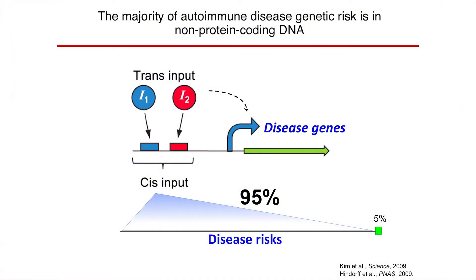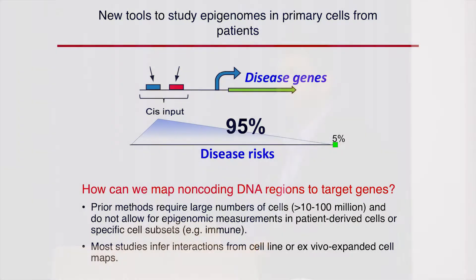What our group is interested in is understanding how changes in the non-protein coding genome impact the expression of disease-associated genes. When we talk about the non-coding genome, we're primarily talking about two things: cis inputs, which are typically thought of as enhancer regions that control gene expression, and trans inputs, which are transcription factors that bind to these regions and bring them in close proximity with the genes they regulate. The reason we care about this is because the majority of genetic risk for many diseases, including autoimmune disease, lies in this non-coding space — about 90-95% of the risk, with only 5% in the exome.